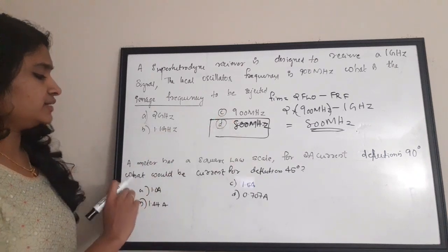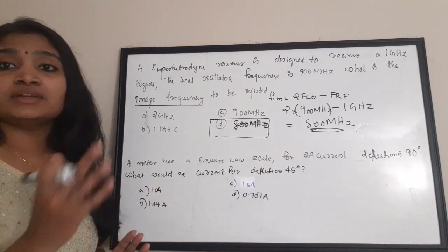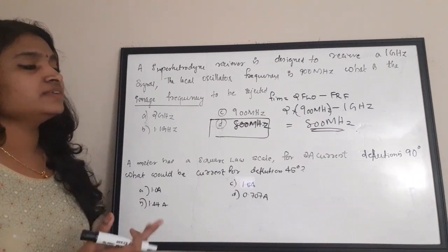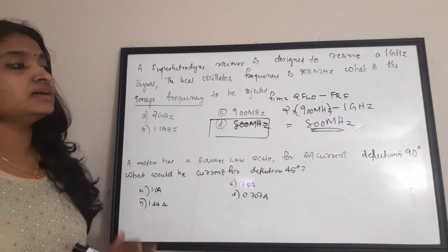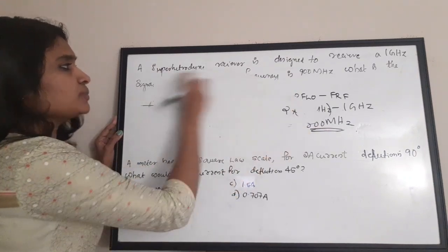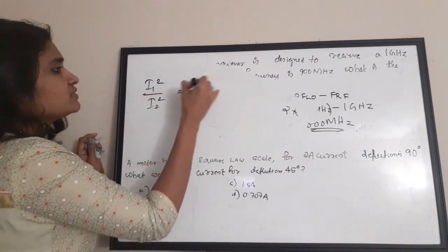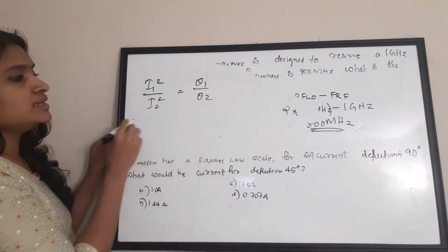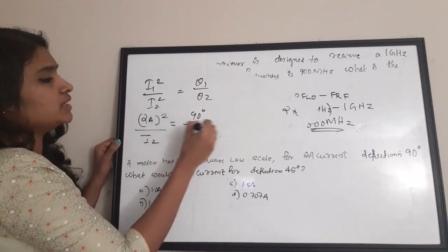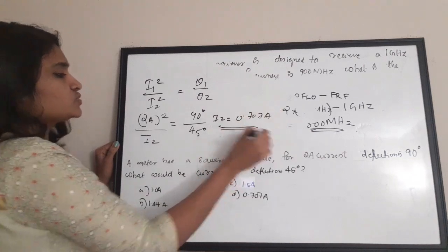Next question: an ammeter has a square law scale. For 2 ampere current, deflection is 90 degrees. What is the current for a deflection of 45 degrees? For a square law scale ammeter, the relation is: I1² / I2² = θ1 / θ2. So 2² / I2² = 90 / 45, giving I2 = 0.707 ampere.